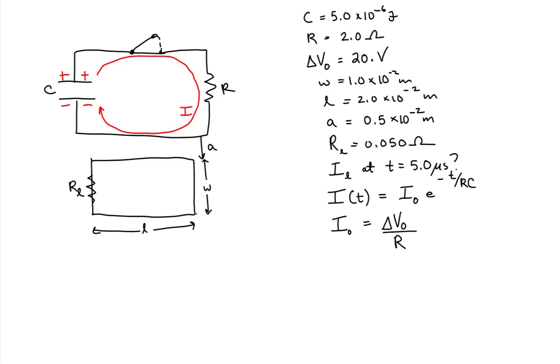So this means that our current as a function of time is equal to the potential difference over the resistance of our RC circuit times e to the minus t over the product of the resistance and the capacitance. So what we can see here is we have an exponentially decaying current.